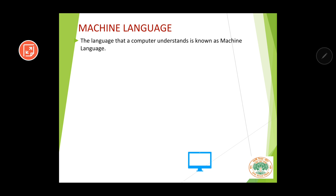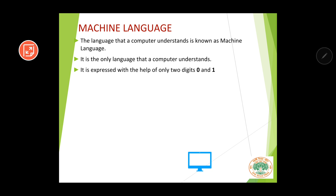What is machine language? The language that a computer understands is known as machine language. It is the only language that a computer understands — a computer cannot understand any other language except machine language. Machine language is expressed with the help of only two digits, zero and one. For writing something in machine language, only these two digits are used.